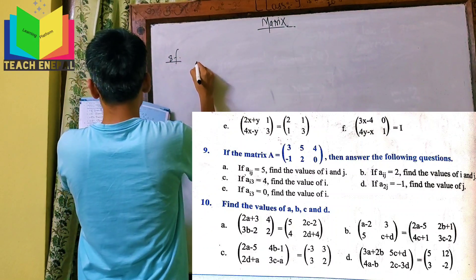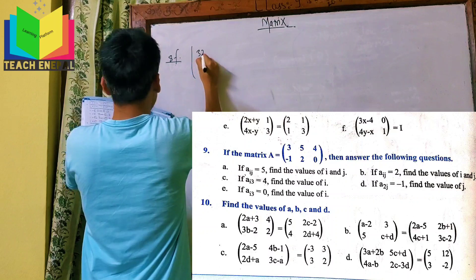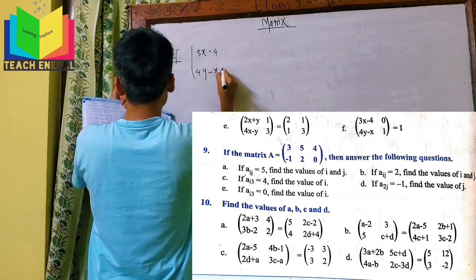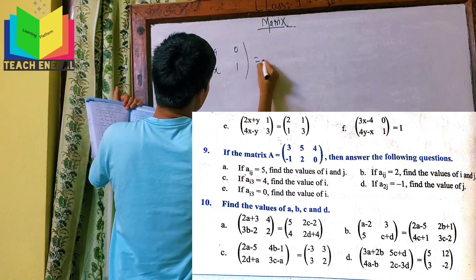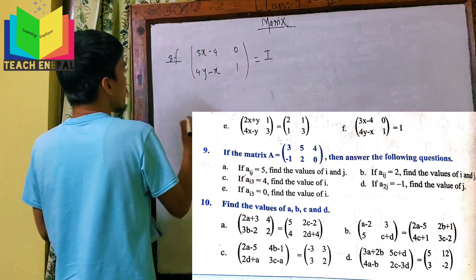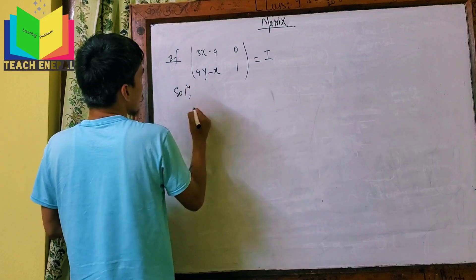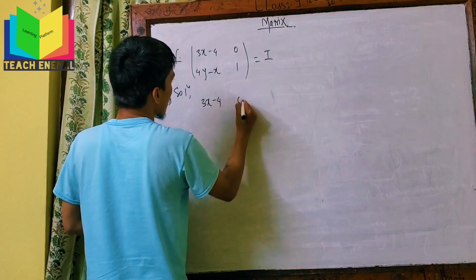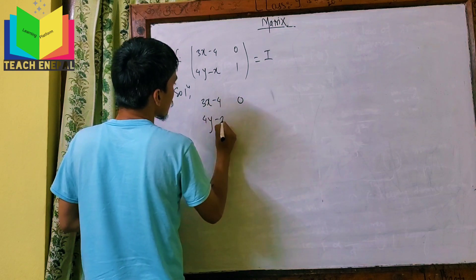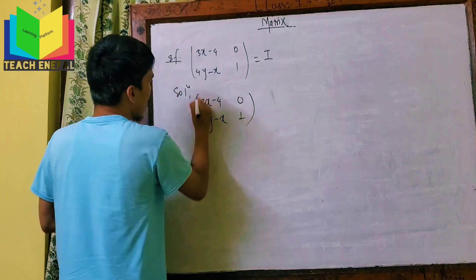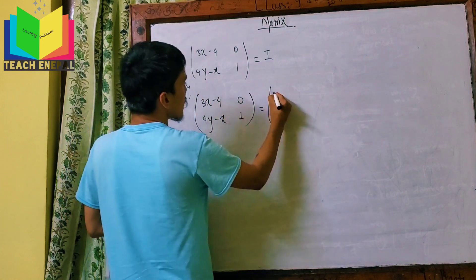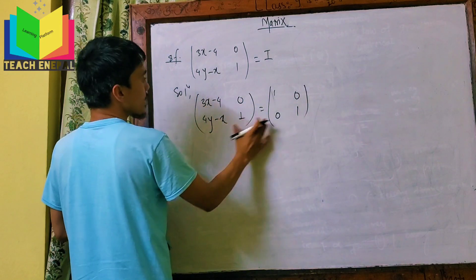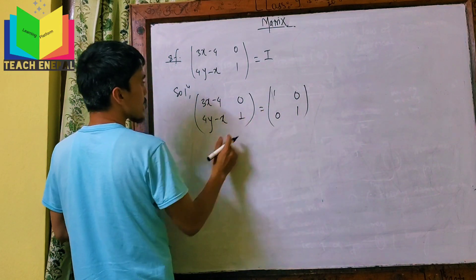What is this? We have 3x-4 and 4y-x and 0 and 1. This is the identity matrix. The identity matrix is a 2x2 matrix. Both matrices will be equal — that means they are equal matrices.